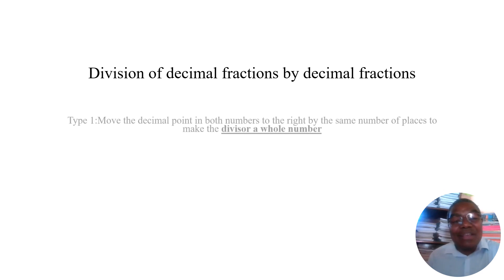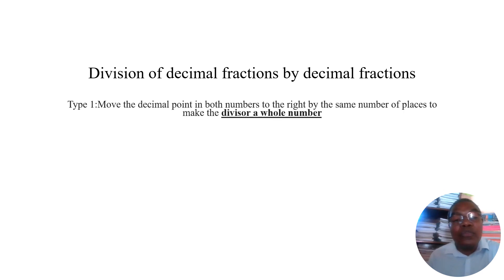We have two types that we are going to observe today. Type 1: we move the decimal point in both numbers to the right by the same number of places to make the divisor a whole number. It's very important — the divisor must be converted to a whole number so that we can apply the long division.